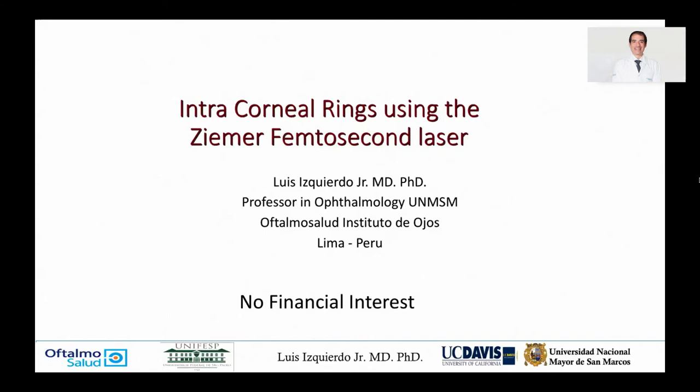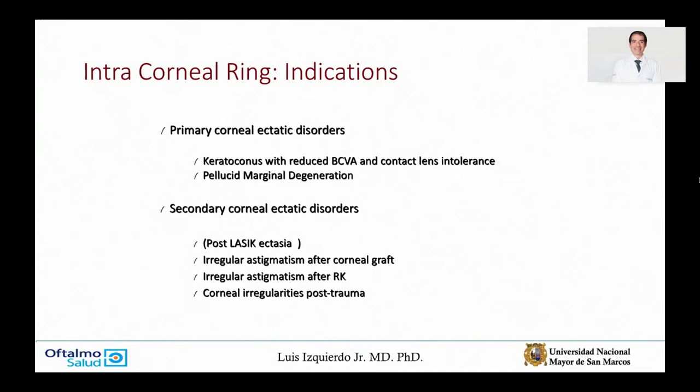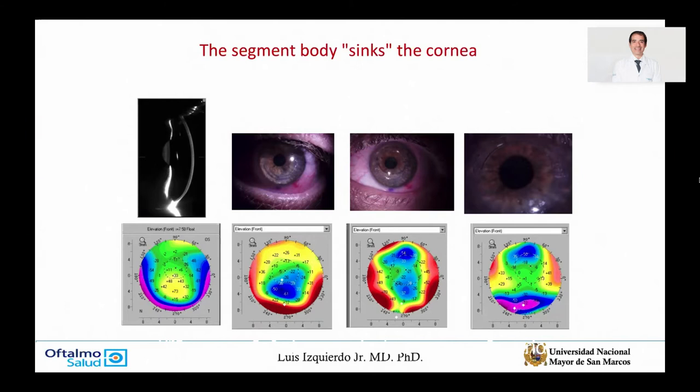The main indication for implanting intracorneal rings is primary corneal ectatic disorders and secondary ones such as post-LASIK ectasia or post-trauma. The main objective of the intracorneal ring is to shrink the cornea. There are different shapes — segments and circular rings such as the Myoring and the Carer ring — with different positions: some placed in a pocket or tunnel. You also have different profiles, like progressive ones with a gradual increase of thickness, or a double ring for special situations.